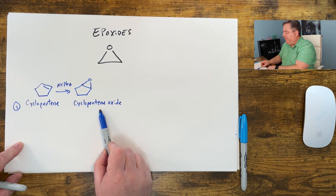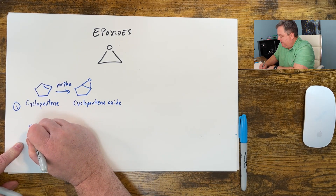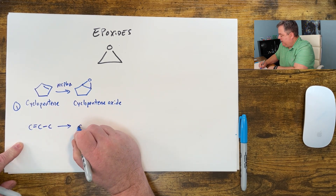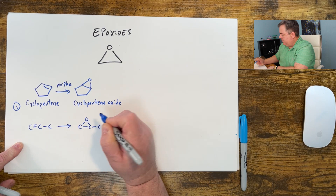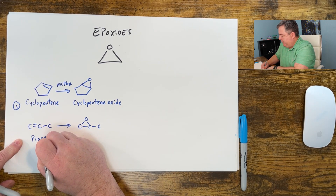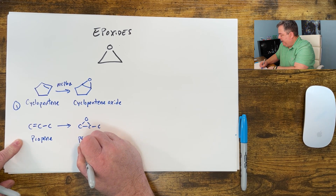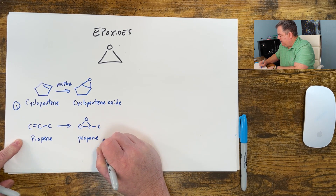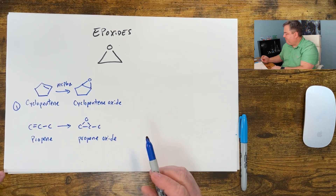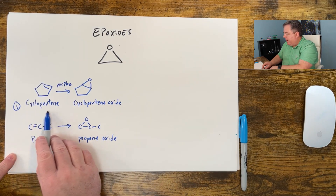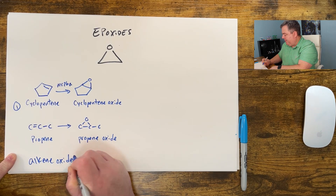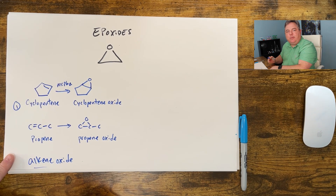It's the oxide — the epoxide made from cyclopentene. If I take this double bond and make this epoxide, this is propene, so this would be propene oxide — the oxide made from propene. That's one way to name it: alkene oxide. Name the alkene it comes from and put the word oxide on the end.